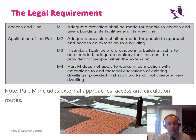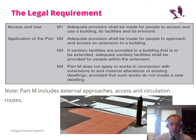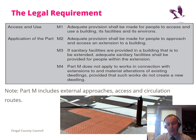M1 is really the legal requirement: adequate provision shall be made for people to access and use a building, its facilities and its environments. M2 to M4 just emphasise certain parts of this regulation. It's worth noting that it mentions environments — that is the bit outside the building — so Part M also includes external approaches.